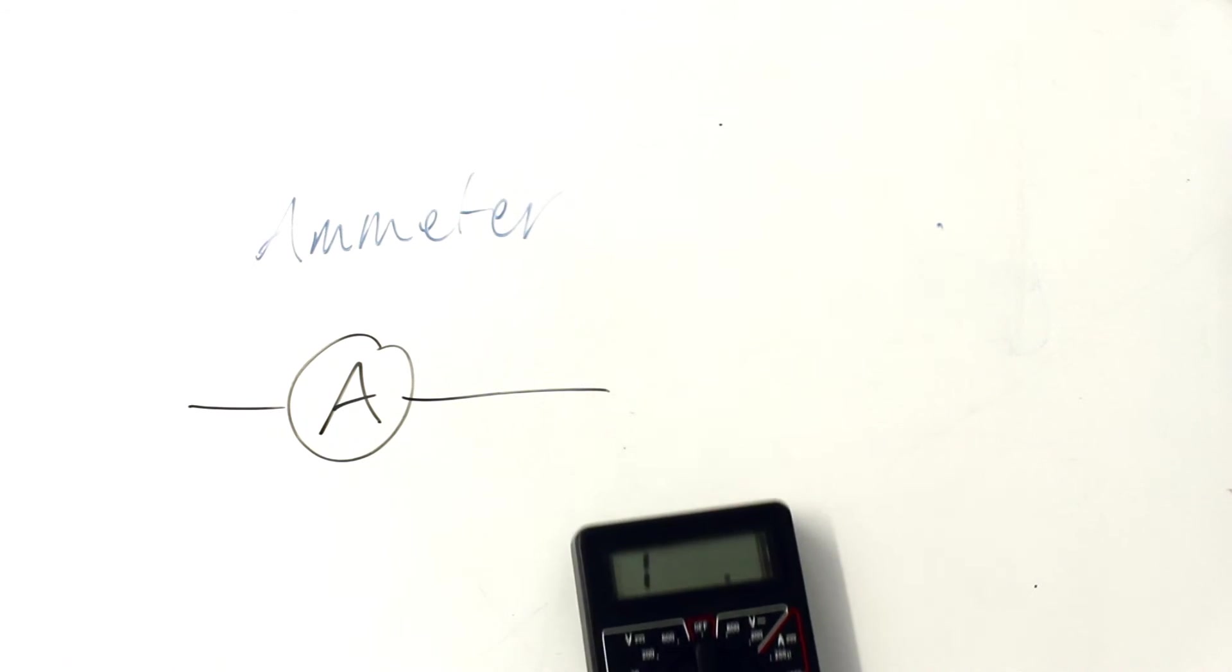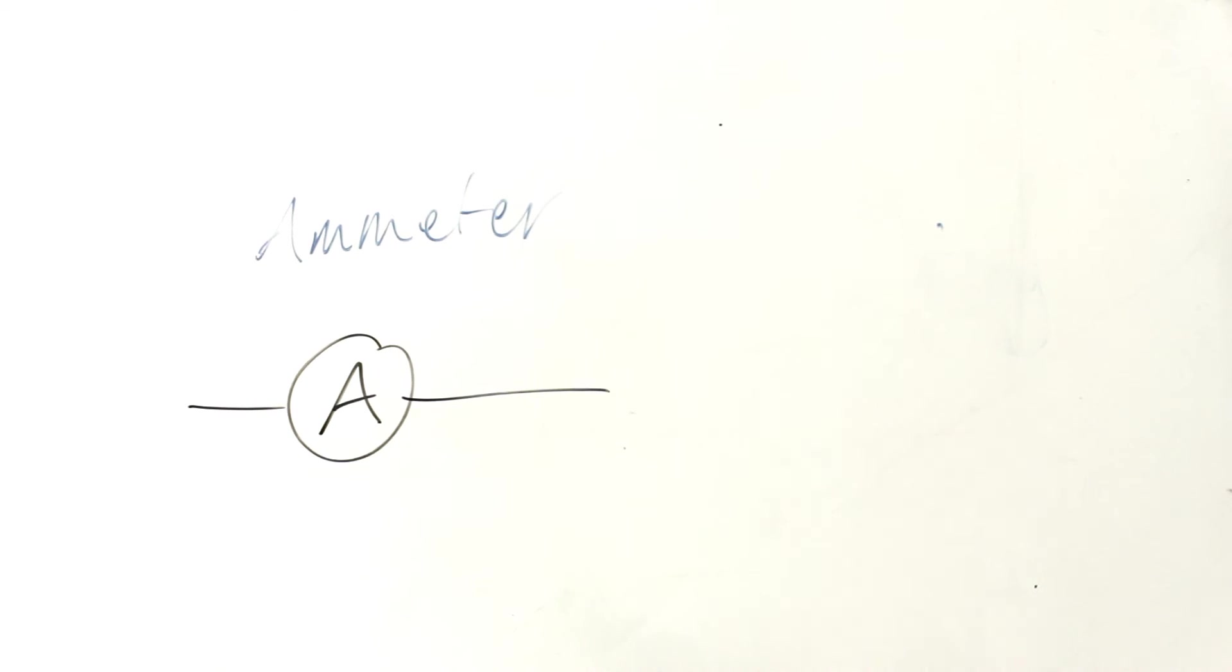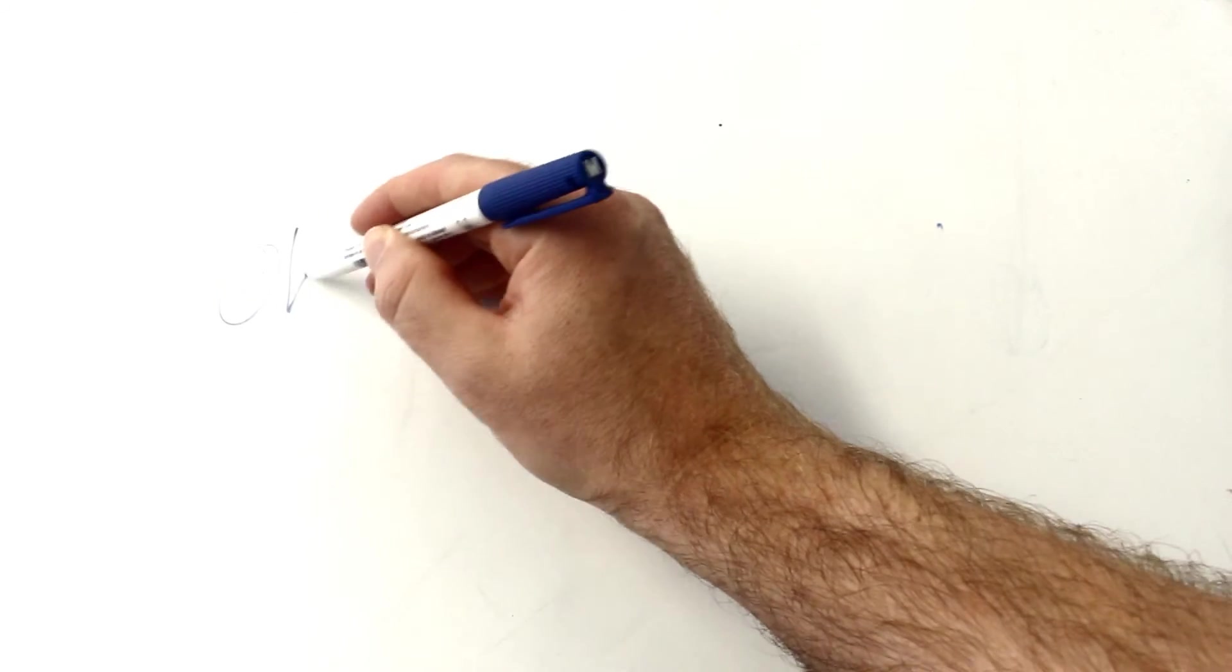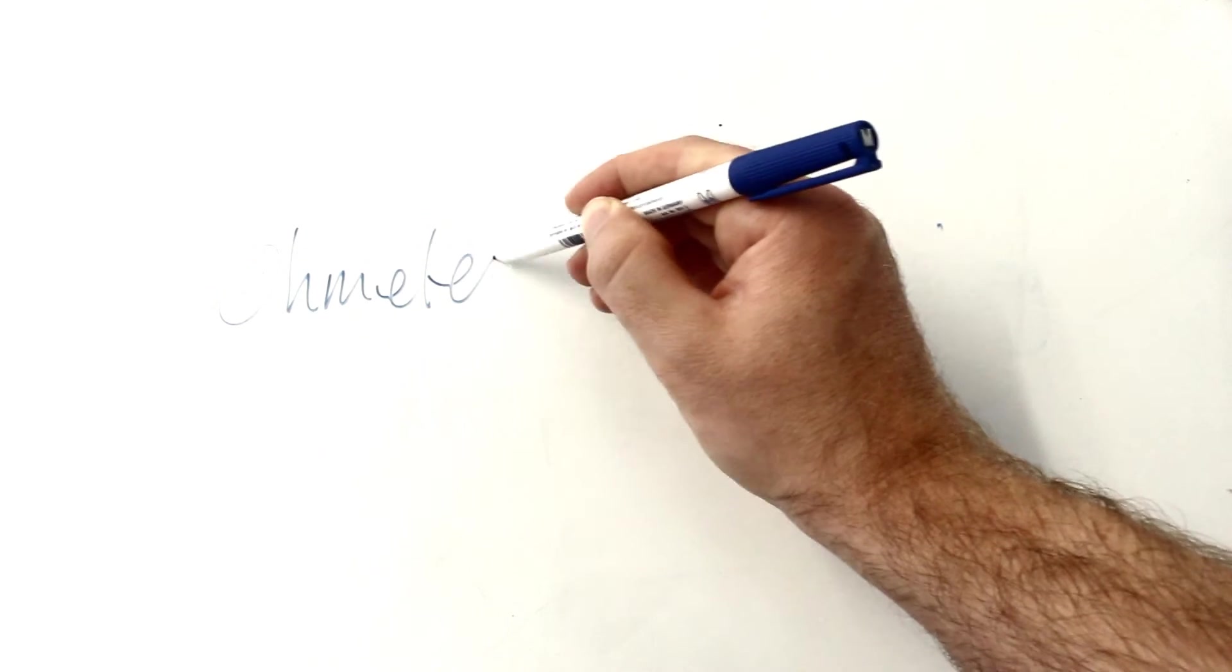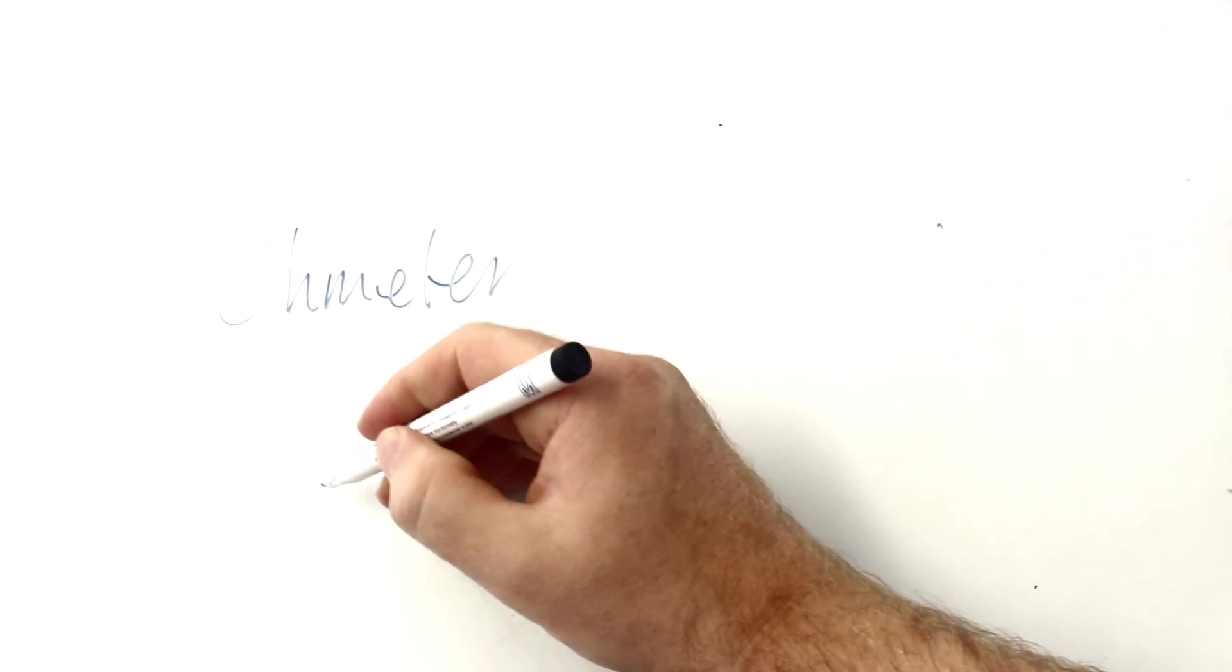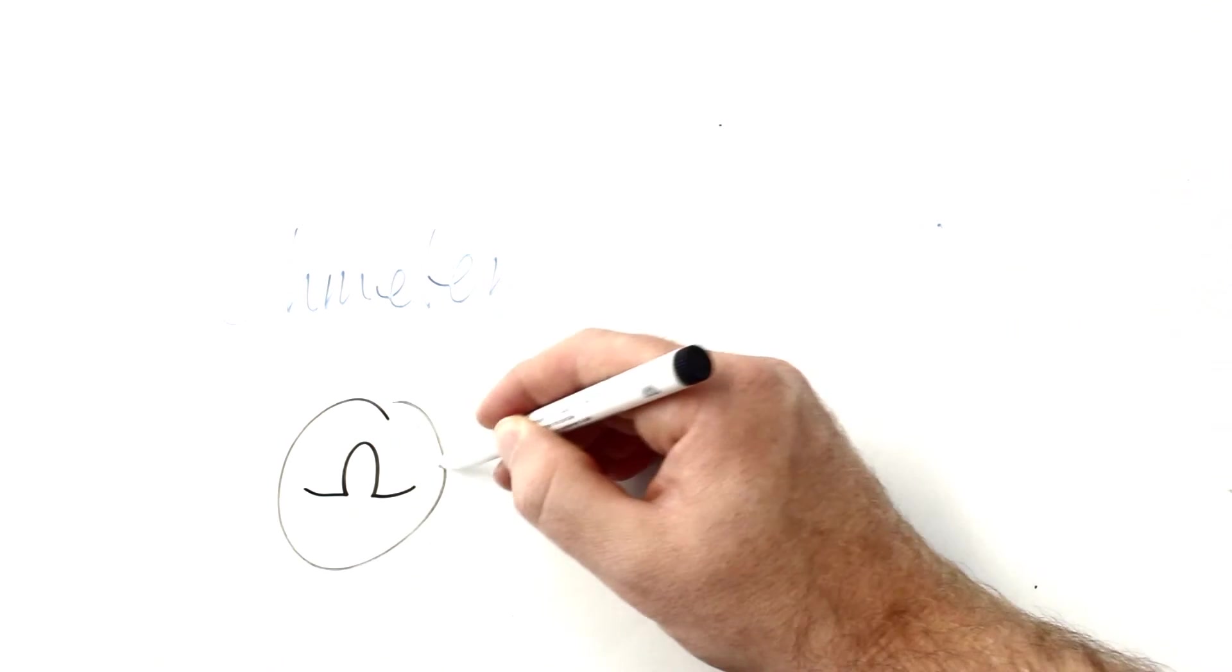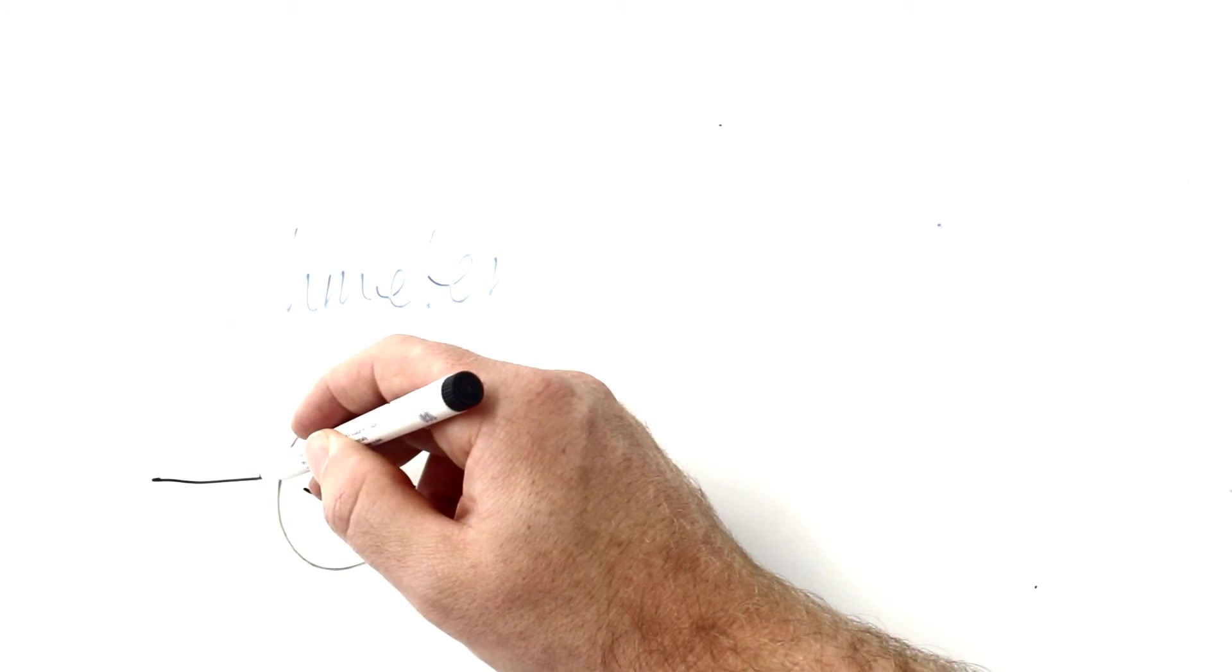So you've probably guessed what an ohm meter symbol is. It's an ohm sign in a circle in the circuit, and it goes across whatever you're trying to measure the resistance of.